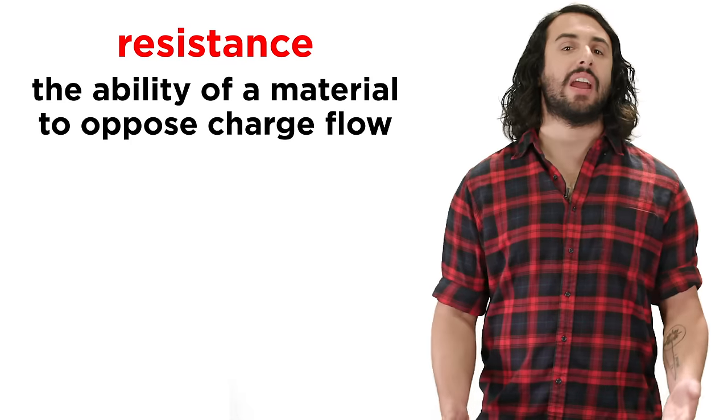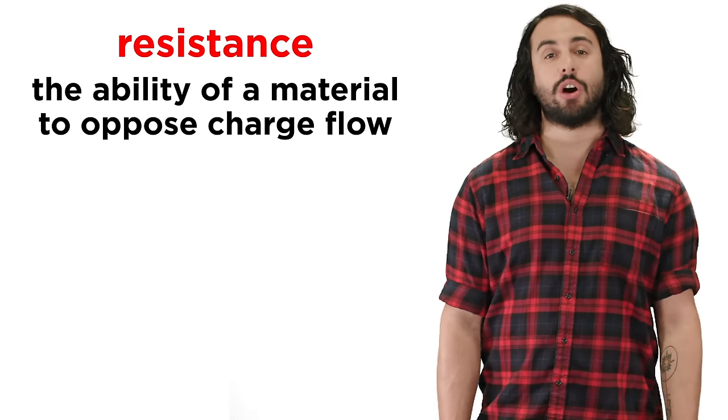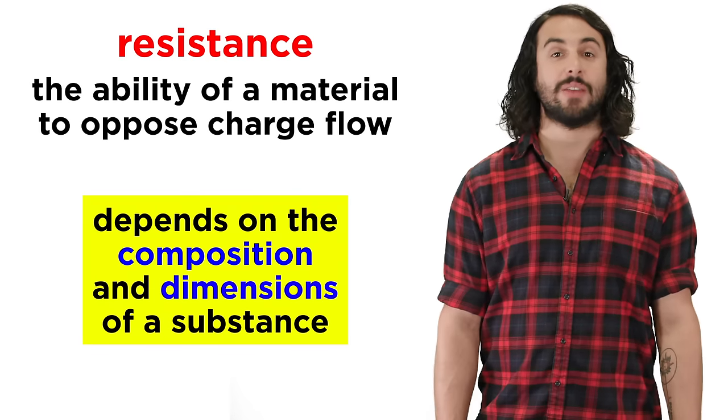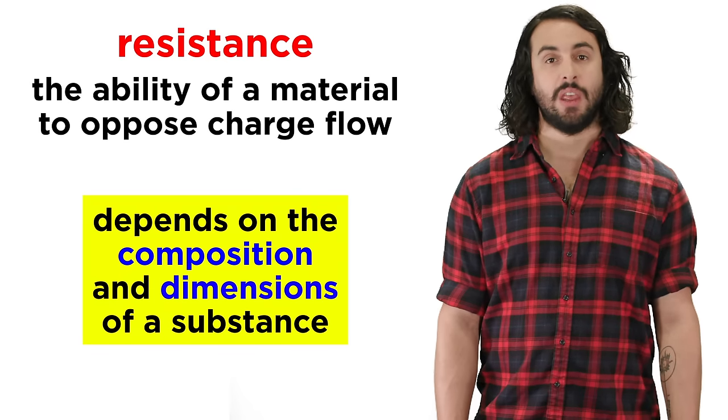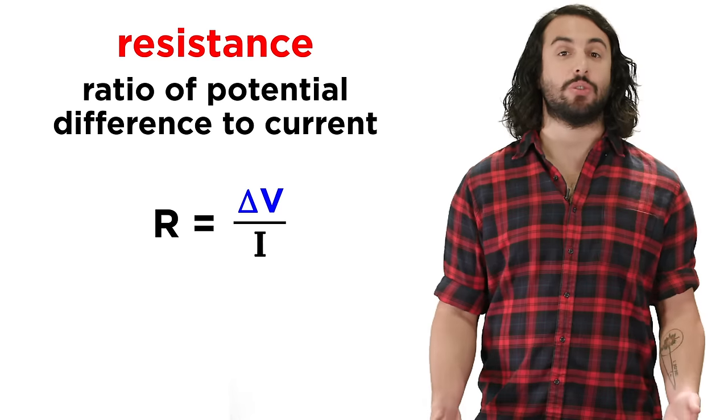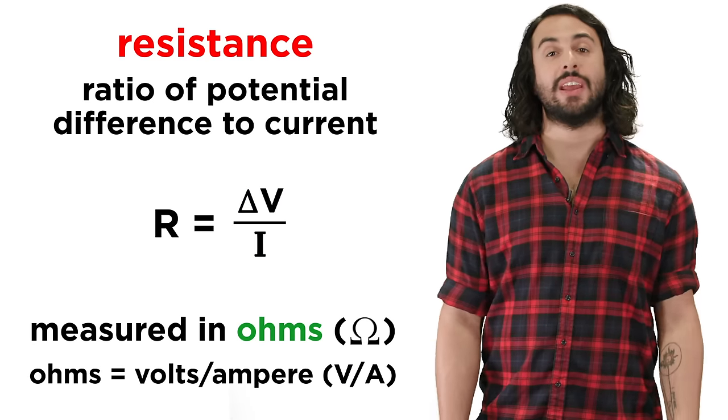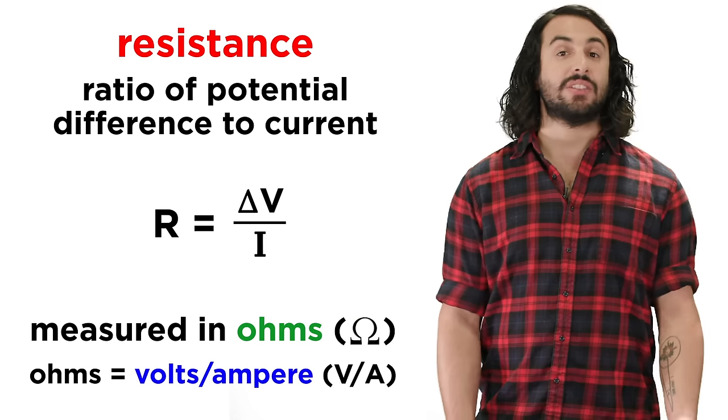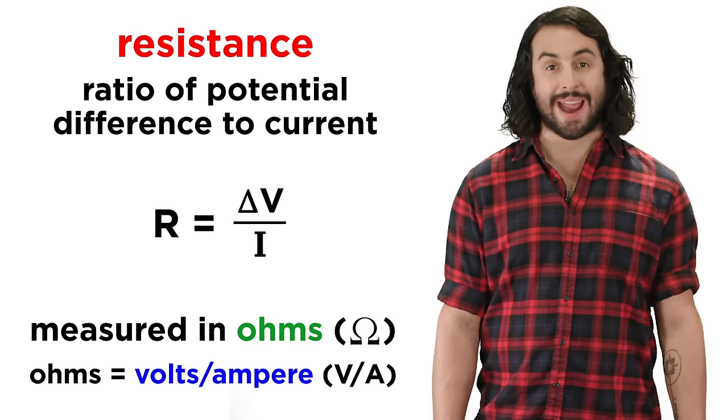The ability of a material to oppose the motion of charge is called resistance, which will be unique to a substance and vary by the dimensions of the material. This is the ratio of potential difference to current measured in ohms, which are represented by the Greek letter omega. These are equal to one volt per ampere.